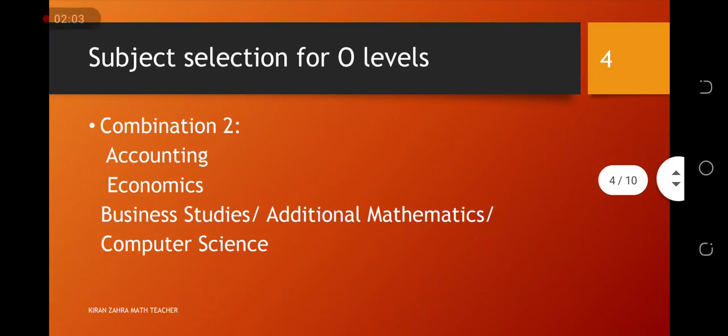Ab hum dousre combination ki taraf move karte hain. Dousre combination jho ki bhoat zhada behterine hai, wo hai accounting, economics, business studies, ya phir additional math rakhlen ya computer science rakhlen. Ye combination number two hai, in me se aap ko kooyi eek select karna pade ga, or accounting and economics bhoat acha combination hai.